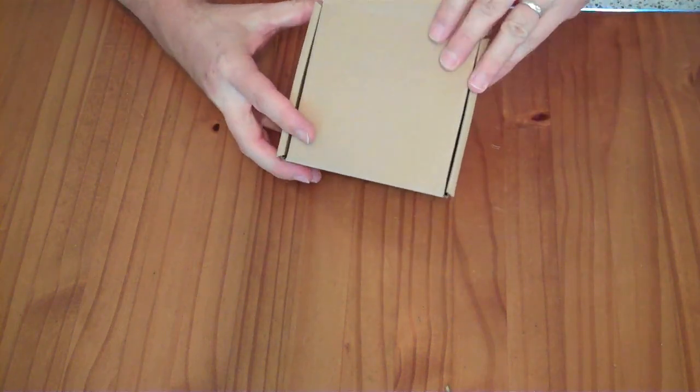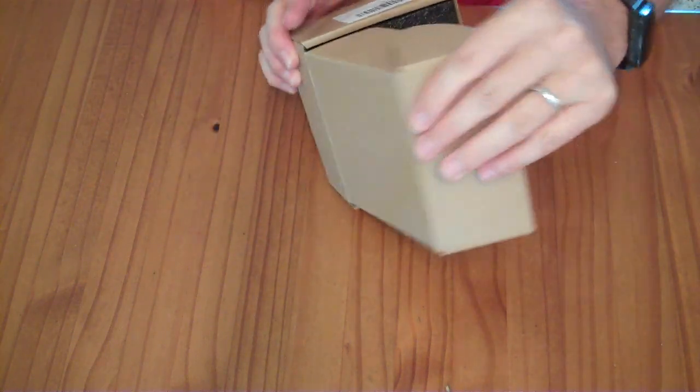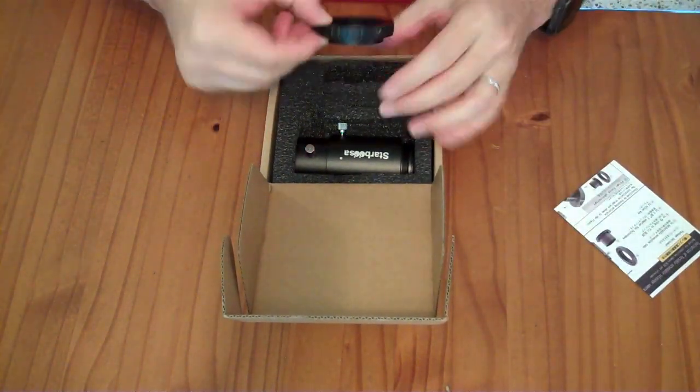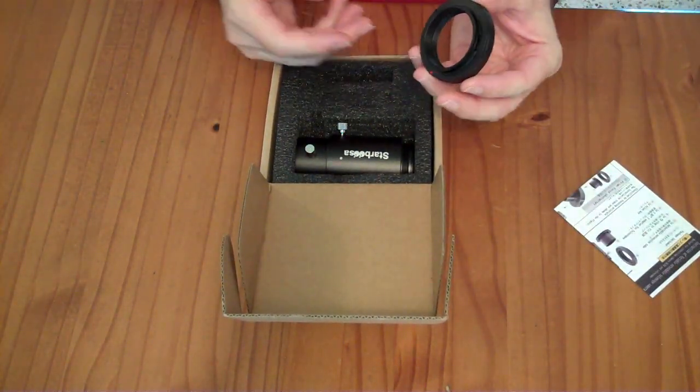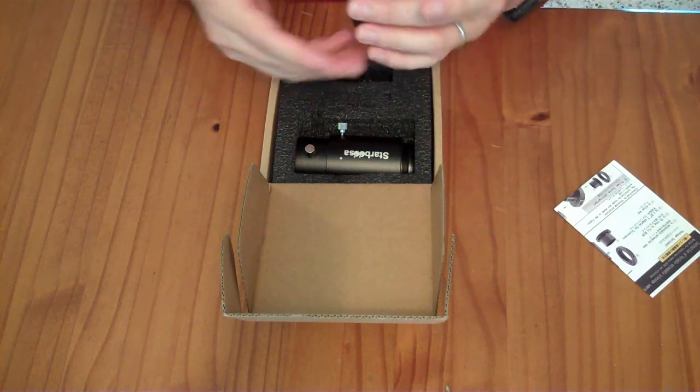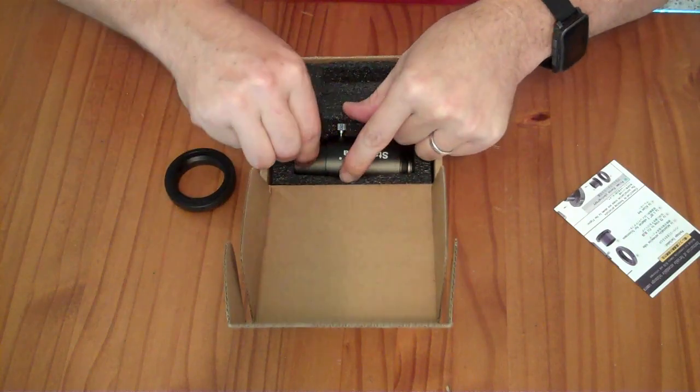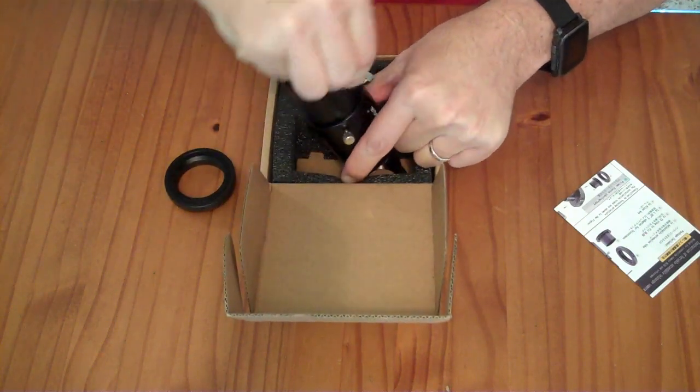I'm reviewing the Starbosa variable extension camera adapter. If you have a T-ring for your camera, it allows you to take off your interchangeable lens, put this T-ring on your camera with standard threading, and then you can attach things to that.